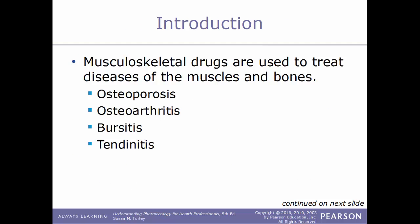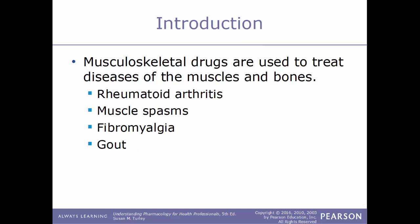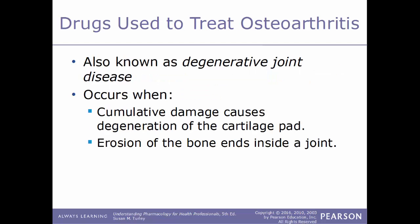A quick introduction: musculoskeletal drugs are used to treat diseases of the muscles and of the bones. Some examples that fall under this category include osteoporosis, osteoarthritis, bursitis, tendonitis, rheumatoid arthritis, muscle spasms, fibromyalgia, and gout. This is a short list of the possible diseases you could encounter with the musculoskeletal system. We'll first start off talking about drugs used to treat osteoarthritis.